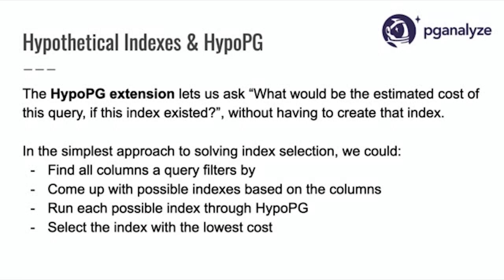In Postgres, we have HypoPG. HypoPG, if you don't know it, is an extension that lets you create a hypothetical index. You don't actually have to create the index — you just state your CREATE INDEX statement, and it inserts a phantom index into the Postgres catalog. Then when you do an EXPLAIN on the query, it pretends that index exists. It lets you ask: what would be the cost of this query if this index existed, without having to create it? So it's much faster. If you want to solve index selection, you could iterate over all possible indexes, run them through HypoPG, and take the lowest cost. HypoPG is a very important ingredient because it lets us avoid actually creating every possible index.